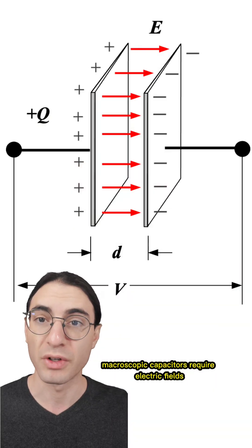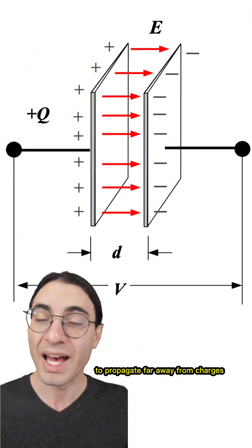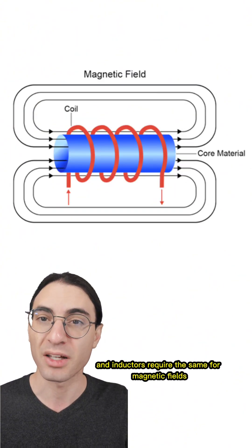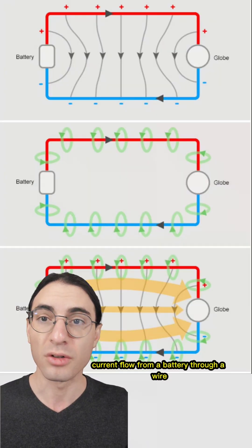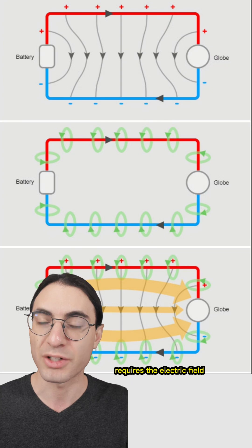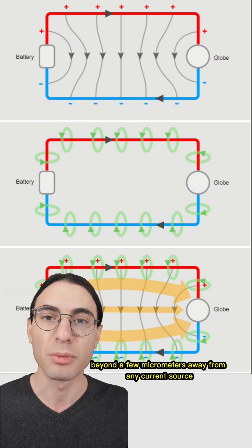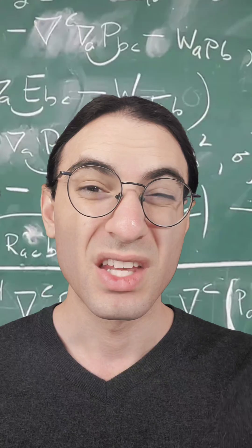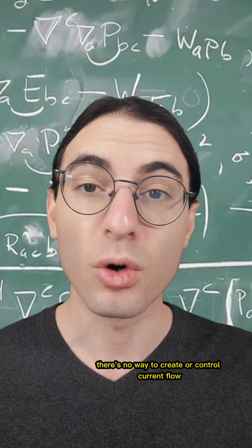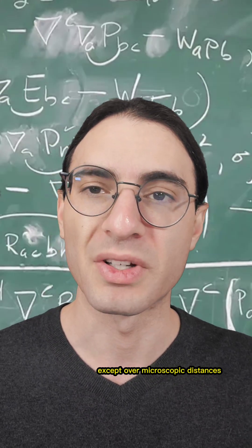Macroscopic capacitors require electric fields to propagate far away from charges, and inductors require the same for magnetic fields far away from currents. Current flow from a battery through a wire requires the electric field to scale linearly with distance, but for a massive photon, they fall off exponentially beyond a few micrometers away from any current source. Essentially, there's no way to create or control current flow except over microscopic distances.